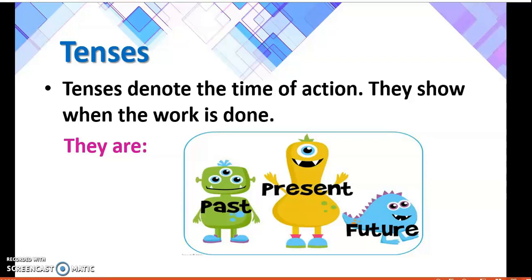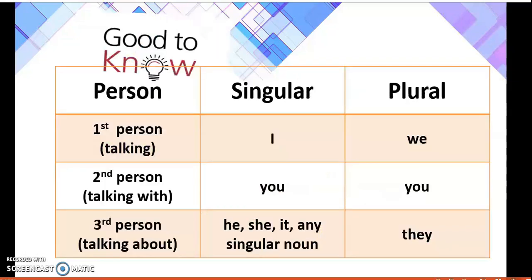In the English language, we have 12 tenses. But right now we are going to discuss only two, and those are present perfect and present perfect continuous. So let's start the lesson.